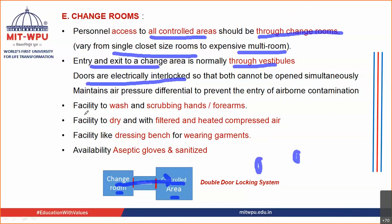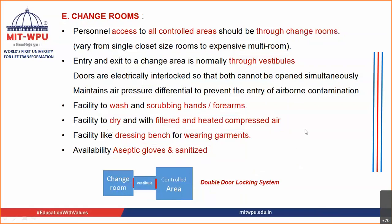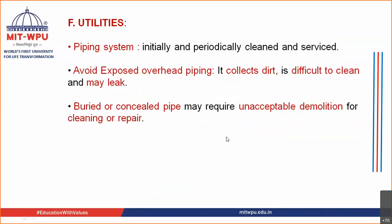Inside the change room, there should be facilities for washing and scrubbing hands and forearms, dry filtered compressed air for drying washed hands, a dressing bench for wearing required garments, availability of aseptic gloves and sanitizers, and a double-door locking system from the change room to the control area.